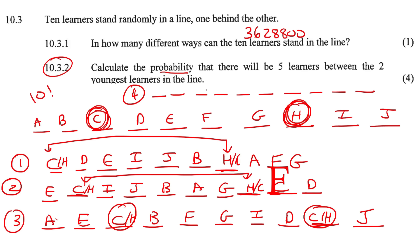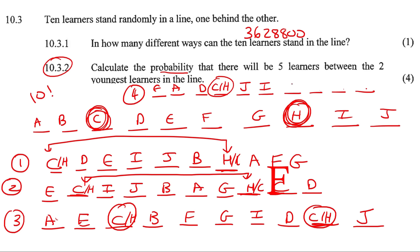The fourth scenario is that we put C or H in the fourth position. Start with E, A, D, then maybe I, then C or H in the fourth position. There have to be five people in between them, so maybe J, I, B, F, G, then H or C at the end. We couldn't go for a fifth scenario where the first person sits in position five because then there wouldn't be enough space to have five people in between them.